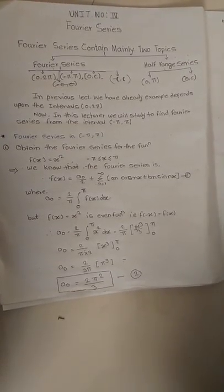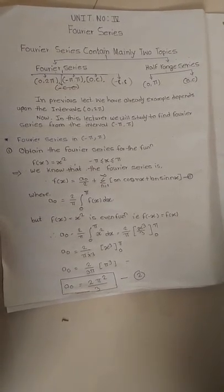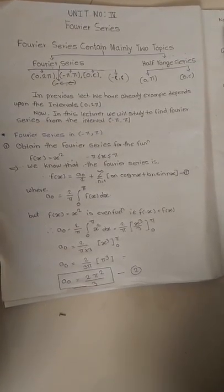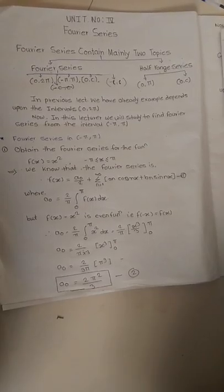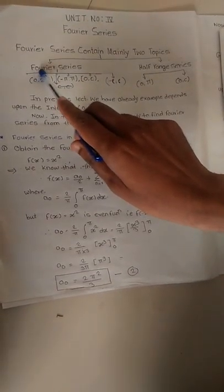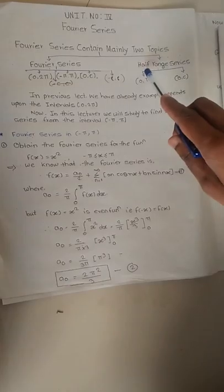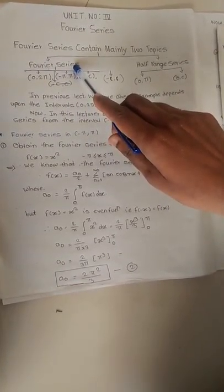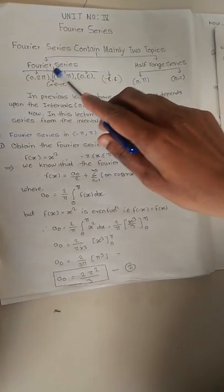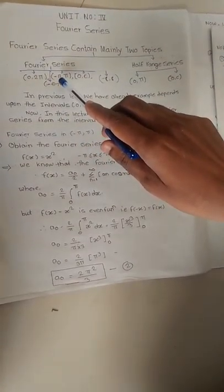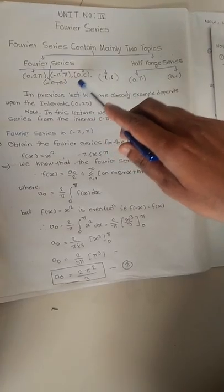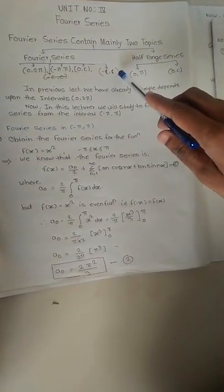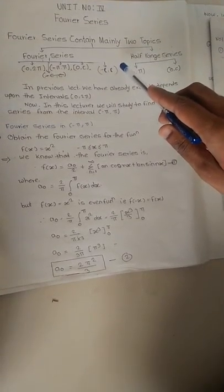Good morning friends. We will see the first lecture on the Fourier series. Fourier series contains mainly two topics: first is the Fourier series, second is the half range series. Fourier series contains basically four intervals: first is zero to two pi, second is minus pi to pi, third is zero to c, fourth is minus c to plus c. Here c is any arbitrary constant.